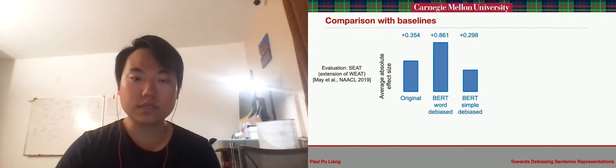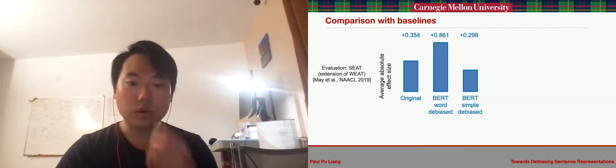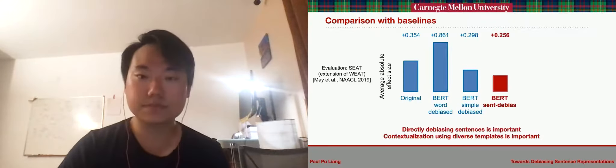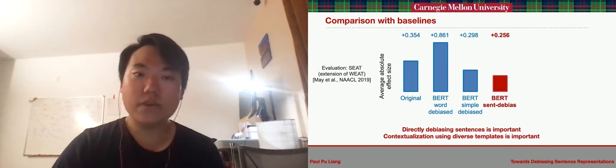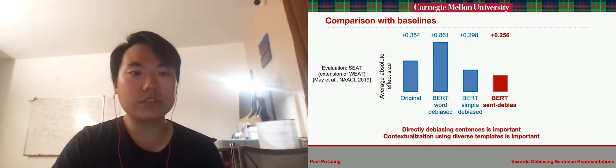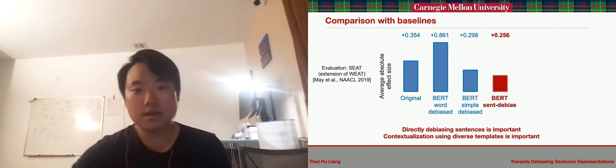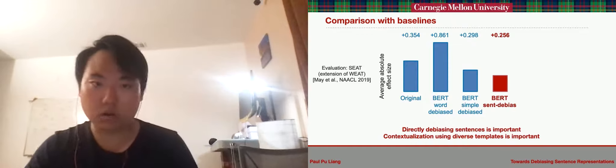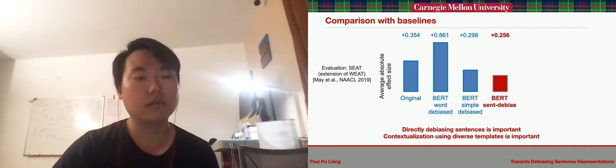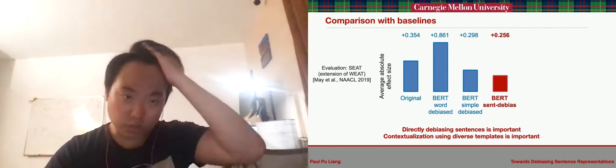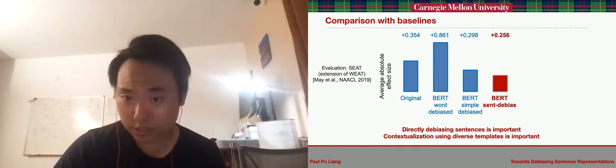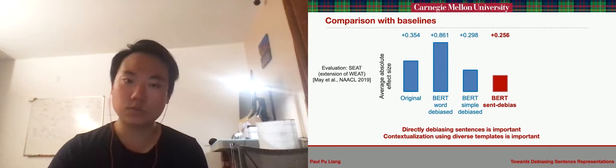We measure bias using a sentence level extension of the word embedding association test. We find that our approach achieves a lower average absolute effect size and outperforms the baselines based on debiasing at the word level and averaging across all these words. This indicates that it is not sufficient to simply debias words and that biases in a sentence could arise from the debiased word constituents.